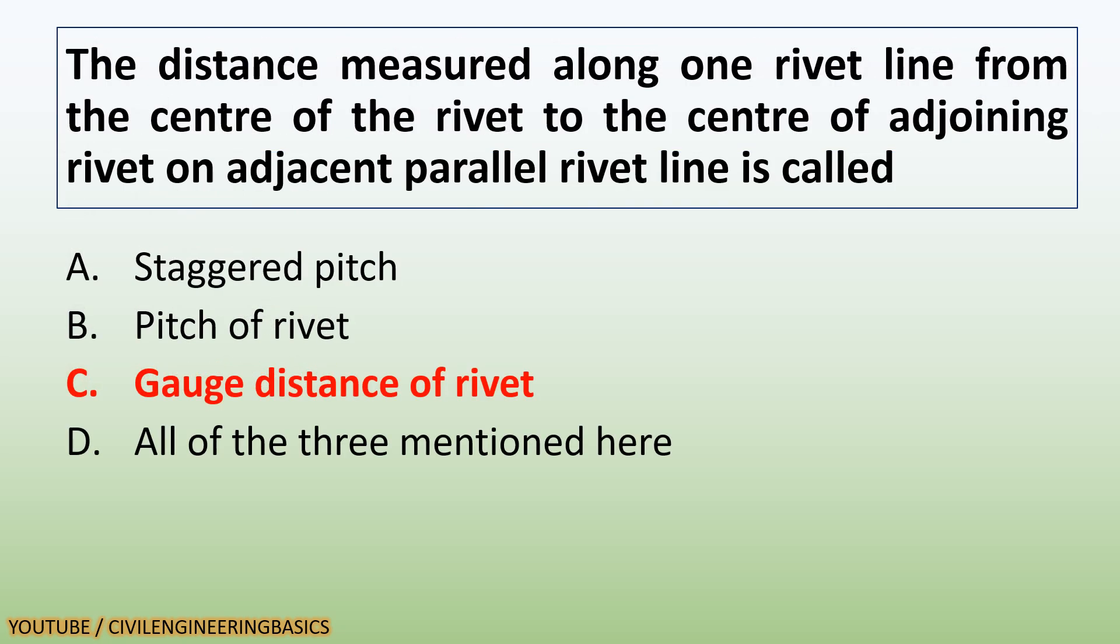The distance measured along one rivet line from the center of the rivet to the center of adjoining rivet on adjacent parallel rivet line is called gauge distance of rivet.